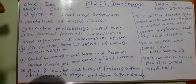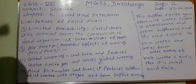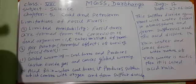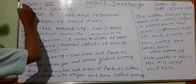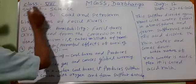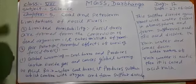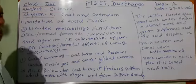Hello, dear students. I am Niranjan Jha, a teacher of Mahatma Gandhi 6th and Sanchandar Bhanga. This time I am going to teach the students of class 8. This is subject science, chapter 5. The name of this chapter is coal and petroleum.